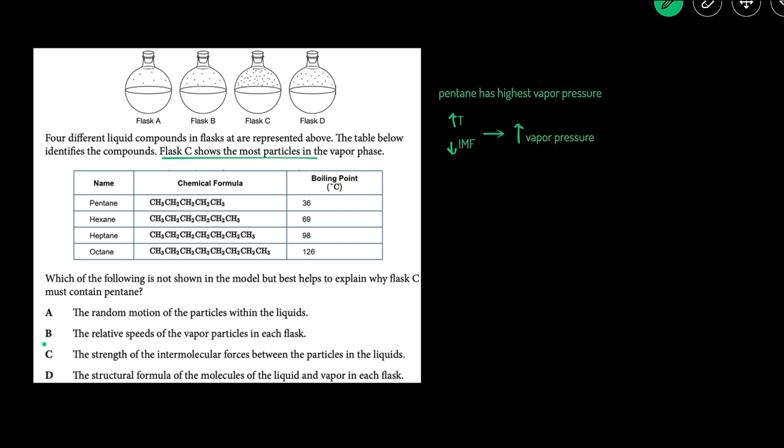And so the answer here is going to be C. The strength of intermolecular forces between the particles will explain why flask C has the highest vapor pressure.